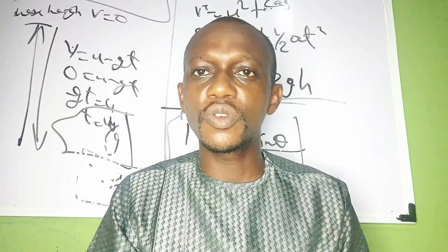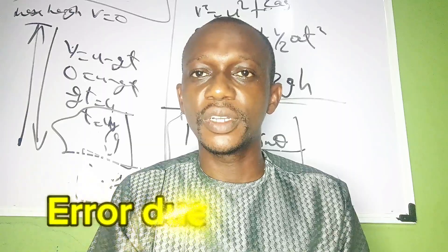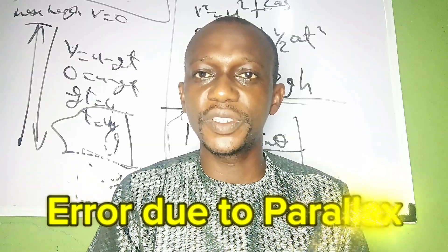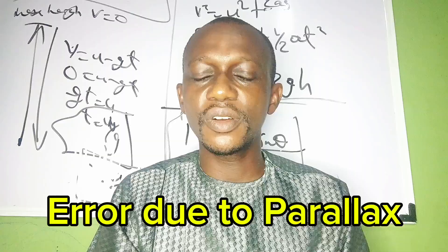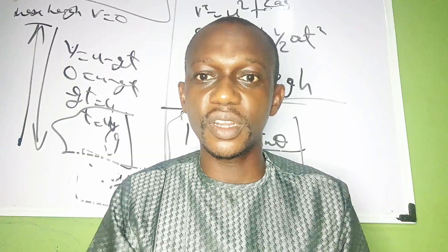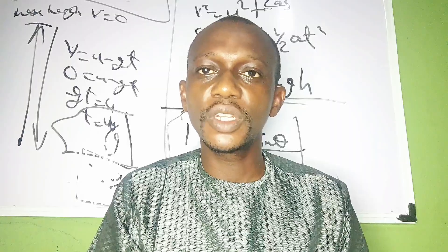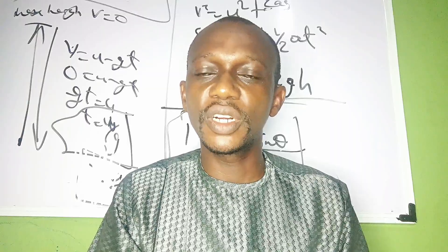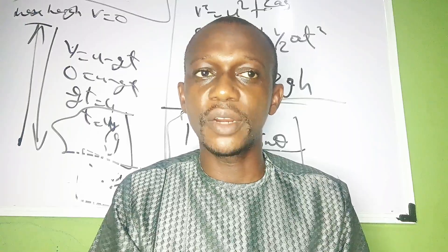The third category under UNIT is Parallax Error. This deals with practical physics. Parallax error is when you are taking your readings and your eye level is not perpendicular to your readings, so you get a wrong reading — which leads to Parallax Error. That's number 1.